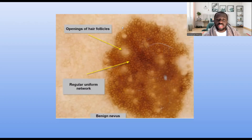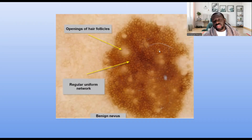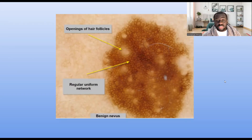You can see this pigmented lesion is symmetrical; if you divide it into two, it gives you two equal halves. It has a regular margin. It has a uniform level of pigmentation — these hollows here are the openings of the hair follicles, but if you exclude those, you'll see that the brownness is uniform and it has a uniform reticular pattern. When you place your dermoscope on this lesion, it confirms this is a benign melanocytic nevus.